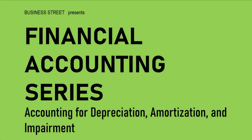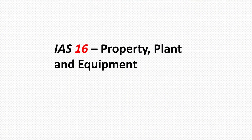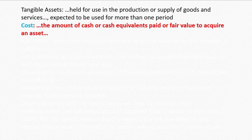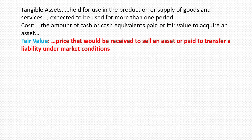Before we begin with the theories, let's take a look at some of the accounting terms defined by the international accounting standards. First, tangible assets means assets held for use in the production of goods and services — for example, properties or buildings. Next, cost means the amount paid to acquire an asset, and fair value refers to the price when buying or selling an asset under market conditions.